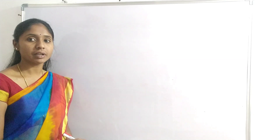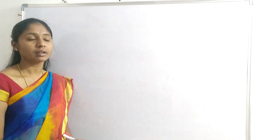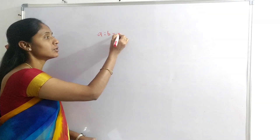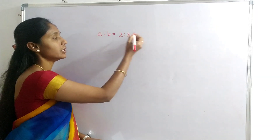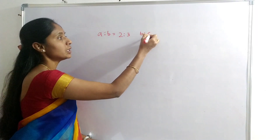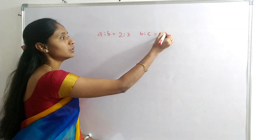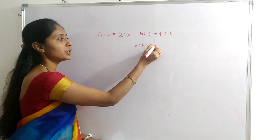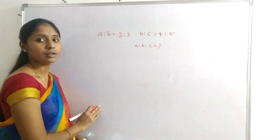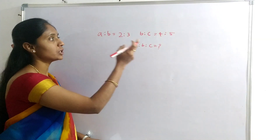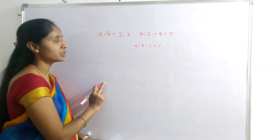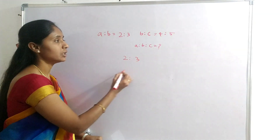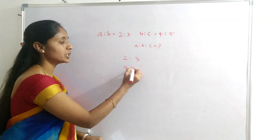Let me cover basic level questions. First question: A is to B equals 2 is to 3, and B is to C equals 4 is to 5. Then find the value of A is to B is to C. Here, A:B = 2:3 and B:C = 4:5.